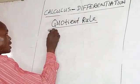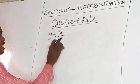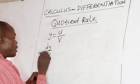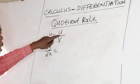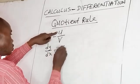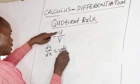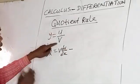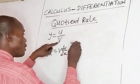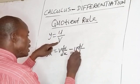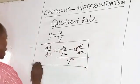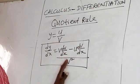The quotient rule applies to a function of the form u over v, where u over v is a fraction. To differentiate using the quotient rule, the formula involves: differentiate u to get 1, times v gives v, so you write du/dx. The terms are separated by a minus sign. Then differentiate v to get 1, times u gives u, so you write dv/dx. All of this is over v squared. This is the formula for the quotient rule, and it is used wherever a fraction is involved.